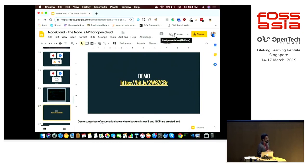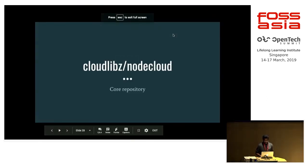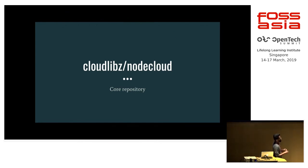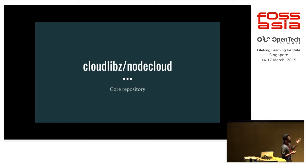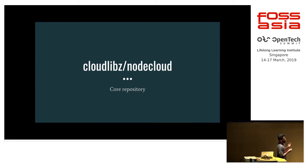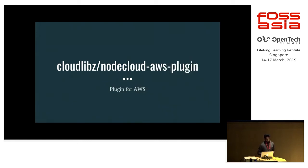That was a quick demonstration of how we can use NodeCloud APIs to interact with different providers with the same API — you don't need to learn about different APIs when building enterprise applications. We have an organization called CloudLibs. NodeCloud is under the CloudLibs organization, so if you go to github.com/cloudlibs/nodecloud you will see the core repository. We have a plugin architecture, and this core repository has the ability to inject different plugins.